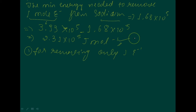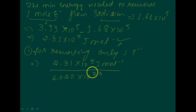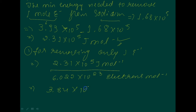Now we have the energy for 1 mole of electrons: 2.31×10⁵ joule per mole. To get the energy for just one electron, divide by Avogadro's number — 6.022×10²³ electrons per mole. This gives 3.84×10⁻¹⁹ joule per electron.